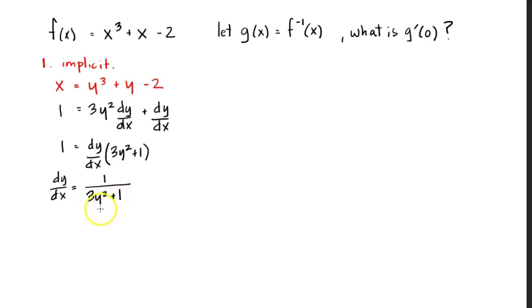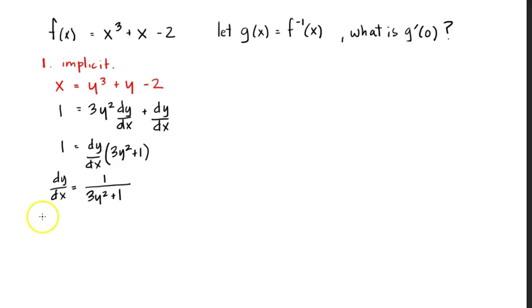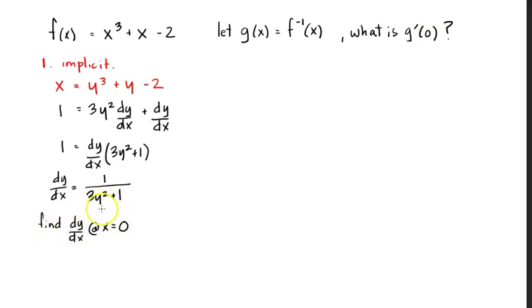Some people have said, wait a minute, I've got this y here and I'm in trouble — I don't know what to do with that. Allow me to tell you, do not worry about that. All you need to find is the y that you need. We're trying to find dy/dx at x equals 0 — that's g prime of 0, that's what we're looking for. But all I've got are y's, there are no x's. So I need to find where the point is for this situation.